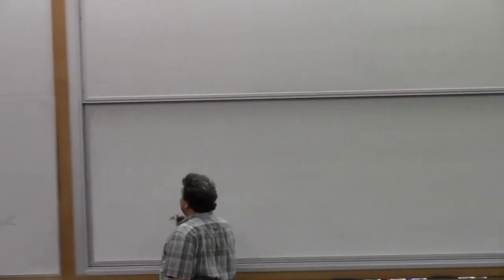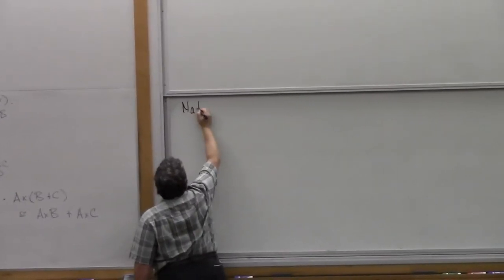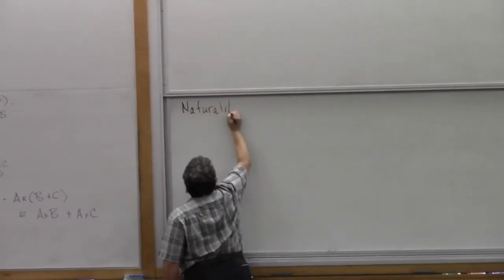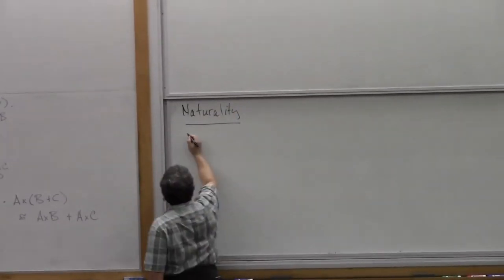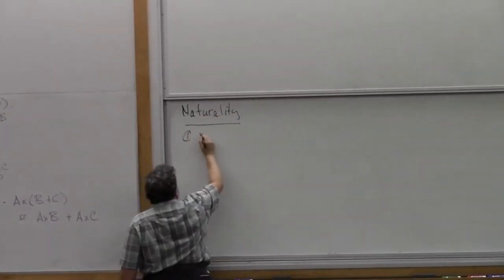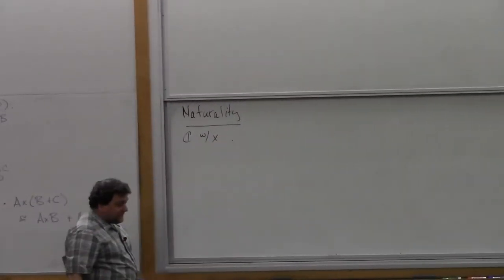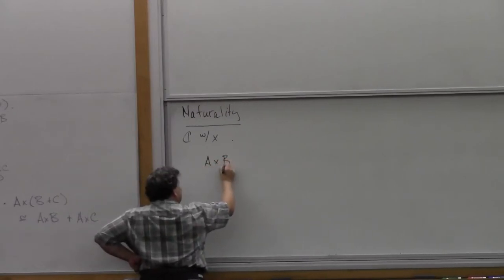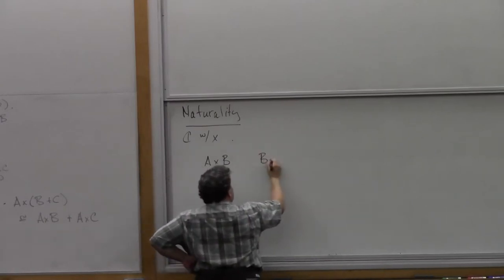So it's this idea of naturality that the notion of category was invented to get one's hands on. Let's start with a very simple example of a natural transformation. Let's suppose we have a category C with just binary products, just to have something to look at. Then we can always make a product of two objects A and B, and we can make a product of those two objects the other way around.